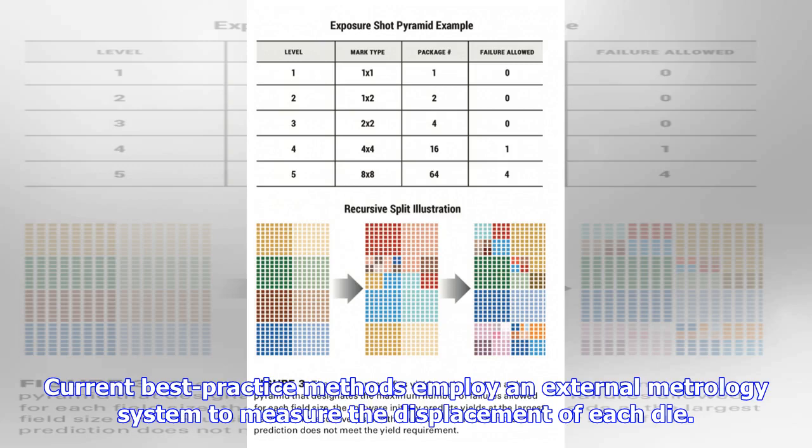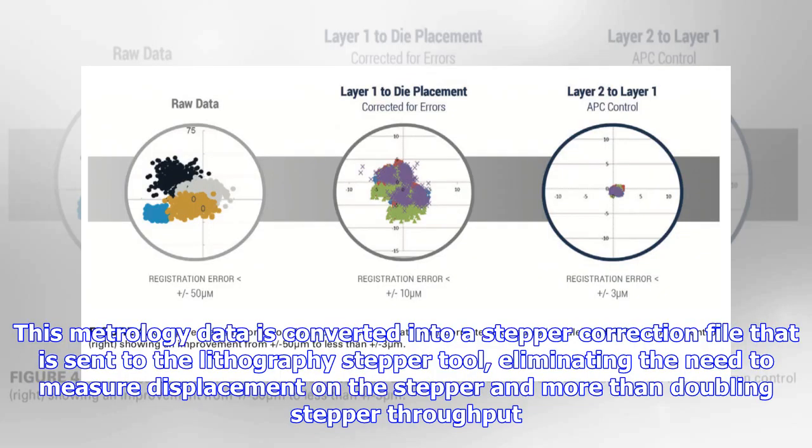Current best practice methods employ an external metrology system to measure the displacement of each die. This metrology data is converted into a stepper correction file that is sent to the lithography stepper tool, eliminating the need to measure displacement on the stepper and more than doubling stepper throughput.